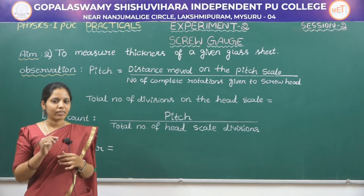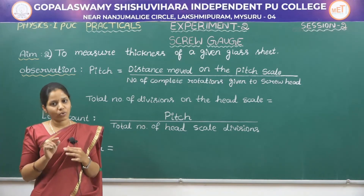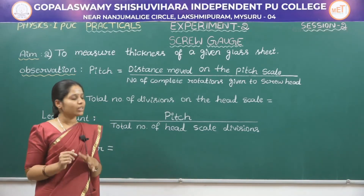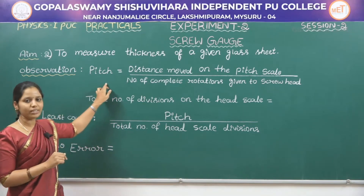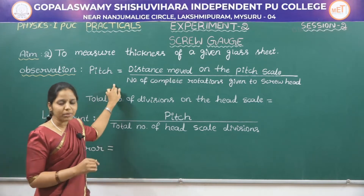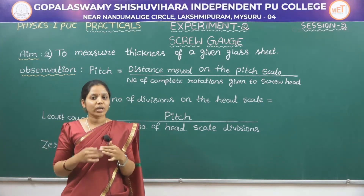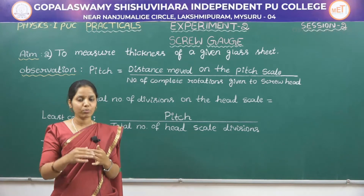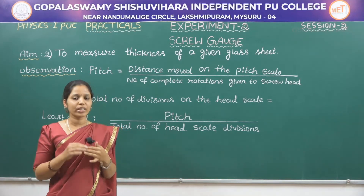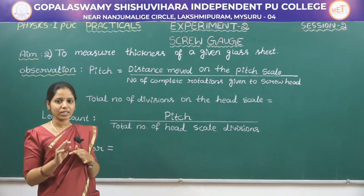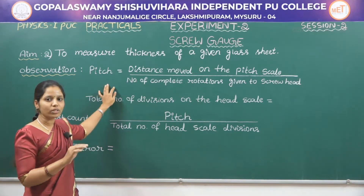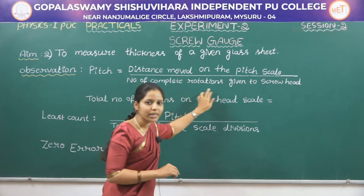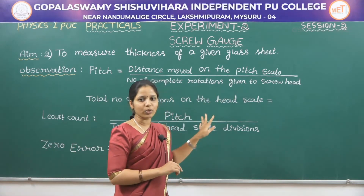In the pitch scale the value of each division is 1 millimeter, and we have 100 divisions on the head scale. The first thing in the observation part is pitch. Pitch means for one complete rotation of the screw, how much distance the circular scale moves forward or backward on the pitch scale. The formula to find pitch is distance moved on the pitch scale divided by number of complete rotations given to the screw head.